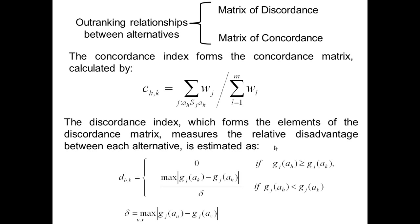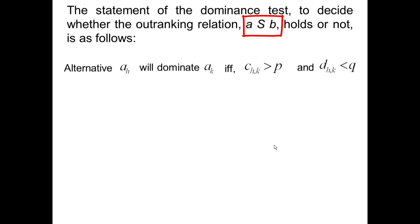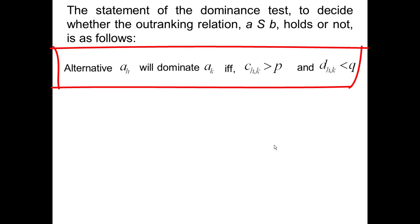That is, the greatest absolute difference of any criteria. The statement of the dominance test to decide whether the ranking relation A-S-B holds or not is as follows. Alternative AH will dominate alternative AK if, and only if, the concordance index HK is greater than P, and also discordance HK is less than Q.